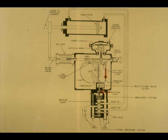If the multiplying valve lowers, it covers the nozzle, and the pressure builds up against the amplifier piston. The amplifier piston lowers.